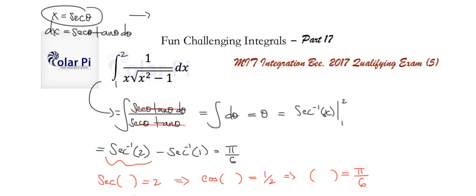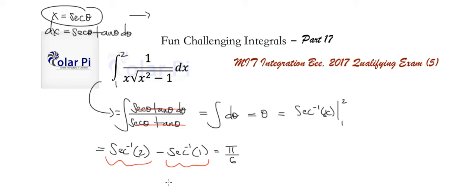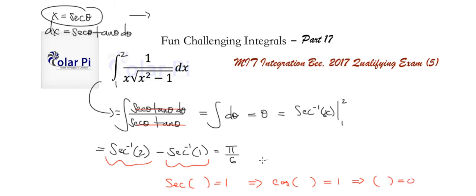Now we have to work on sec inverse of 1. For sec inverse of 1, we can translate it to mean secant of some value equals 1. That means cosine of that value is equal to 1. And we know that value will have to equal 0. So then that means we have minus 0. Therefore, our final answer is pi over 6. Okay, cool — this is it, and I hope you enjoyed the solution. Take care.